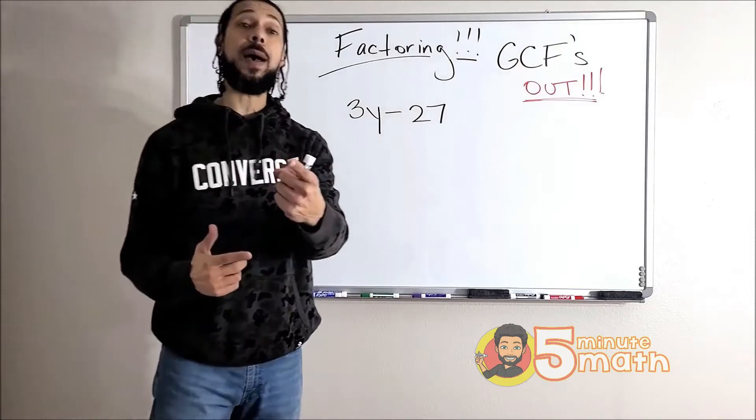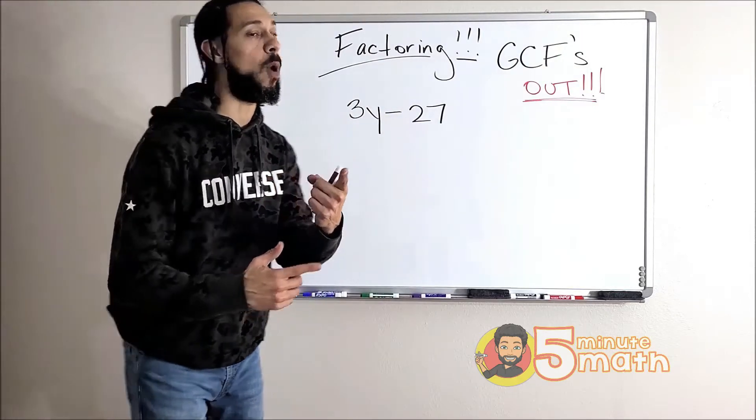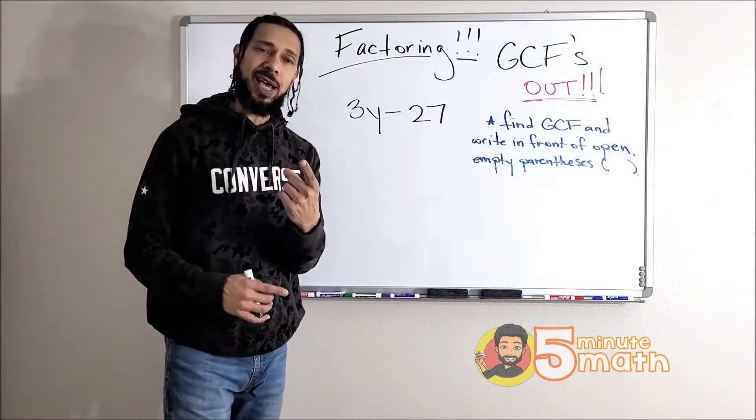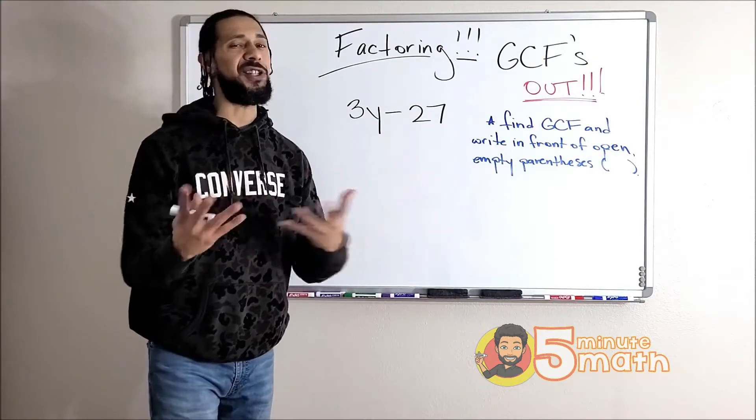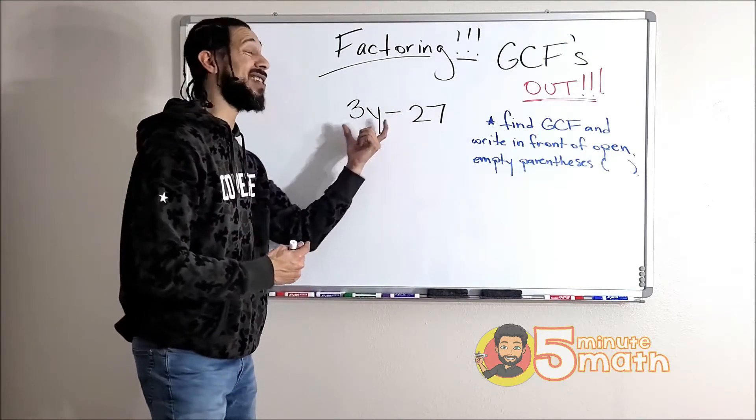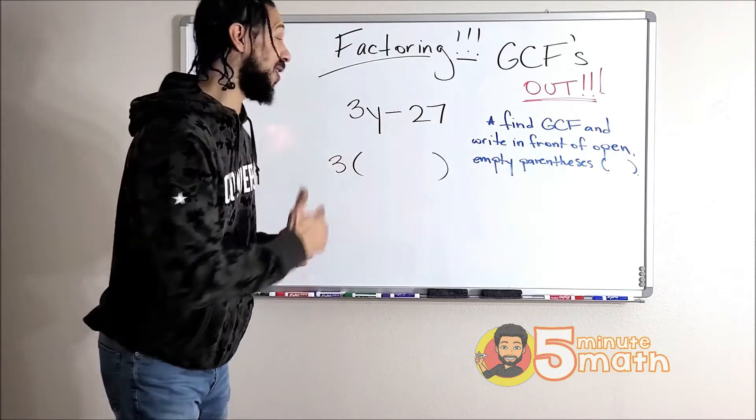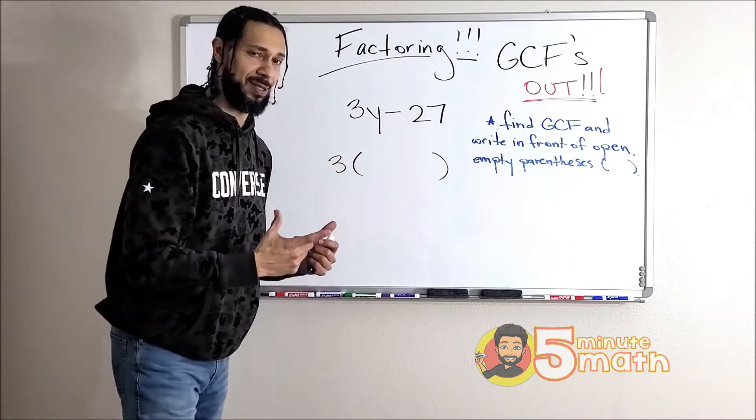Looks simple enough, let's get to it. There's a couple of steps to consider when factoring GCFs out. Let's talk step number one. Step one is to find the GCF and write it in front of some open and empty parentheses. In the last video we talked all about GCFs, and the GCF between these two terms is three. So I took that three and I wrote it right here in front of some open empty parentheses. Leave enough room in the parentheses to fit your old expression.